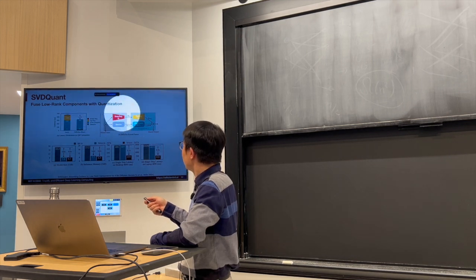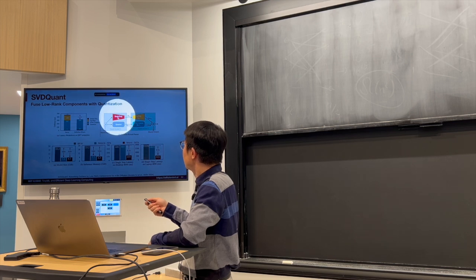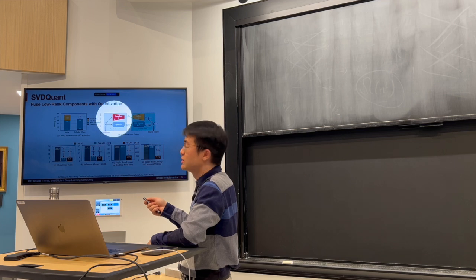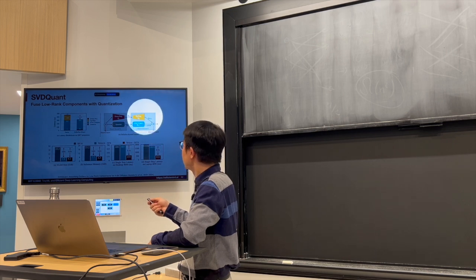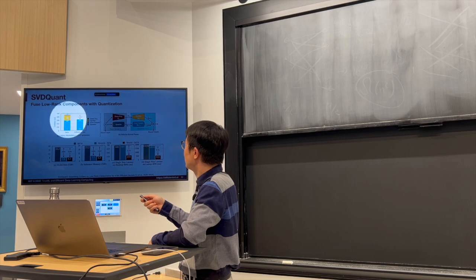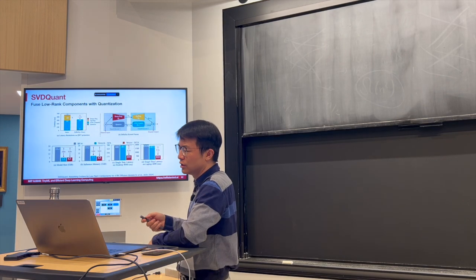We're going to achieve that by actually fusing this down-projection with the previous kernel, since we share the same input, and we fused this up-projection to the next layer for the compute, since we share the same output. And in that way, we can reduce this overhead in red and yellow.